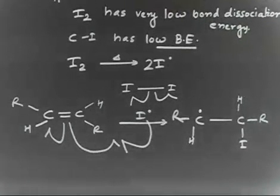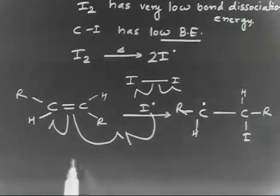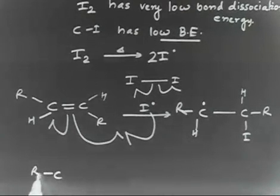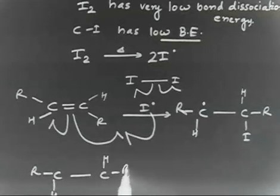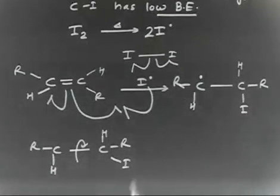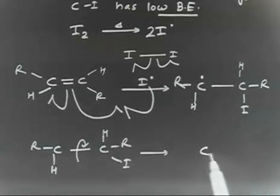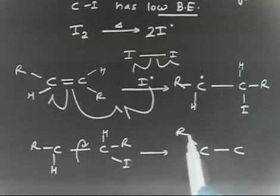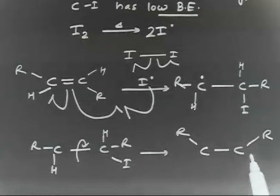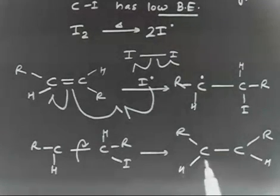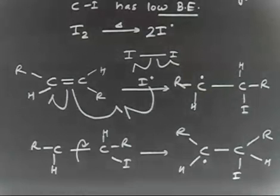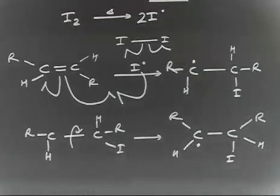Now that we have a single bond, rotation about the single bond is permissible. So with C(R)(H) on one side and C(H)(R)(I) on the other, if the groups were trans we can rotate so that they become cis — R and R on the same side, with the radical and iodine present.